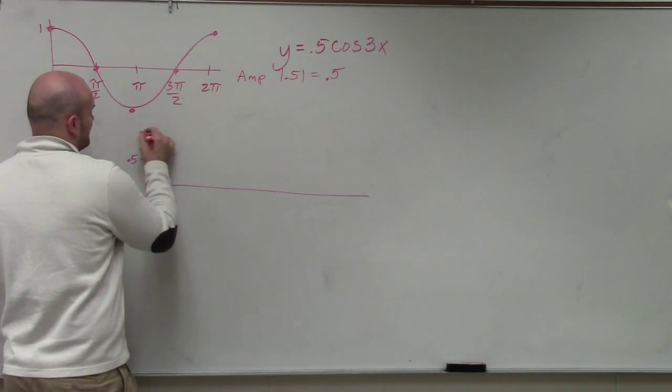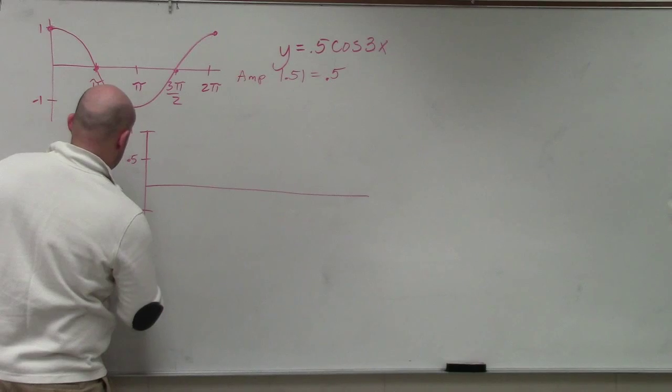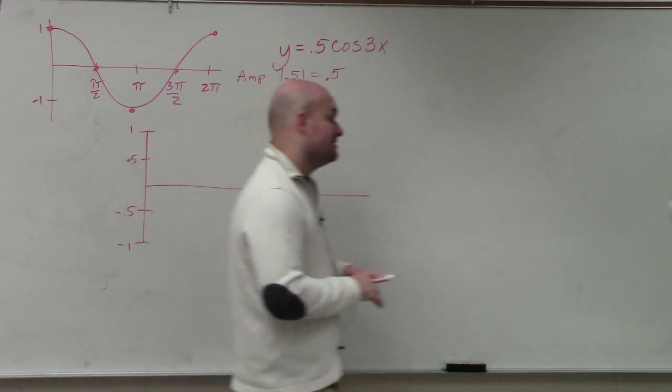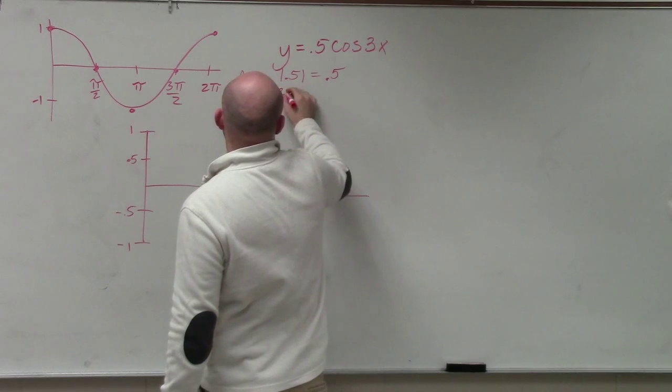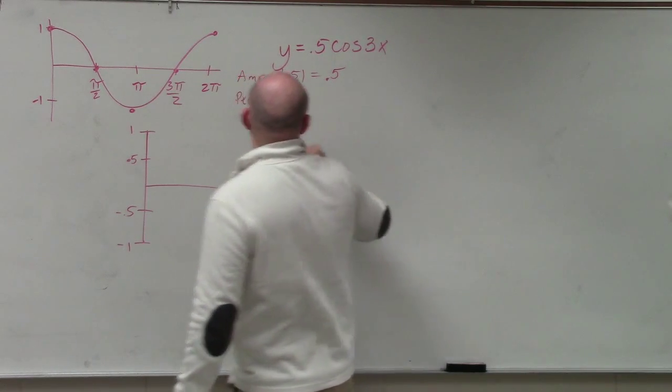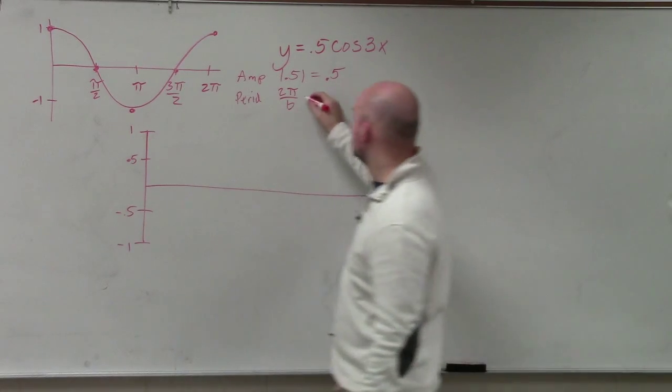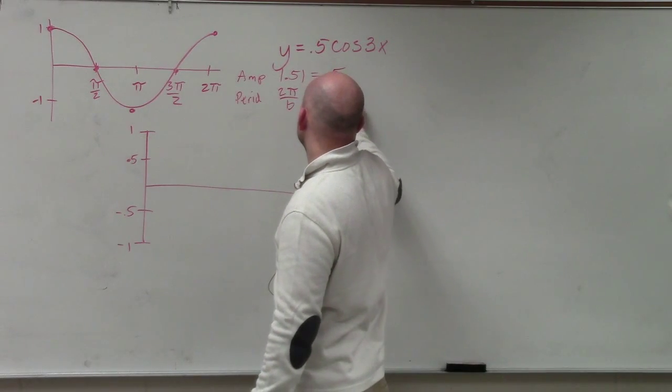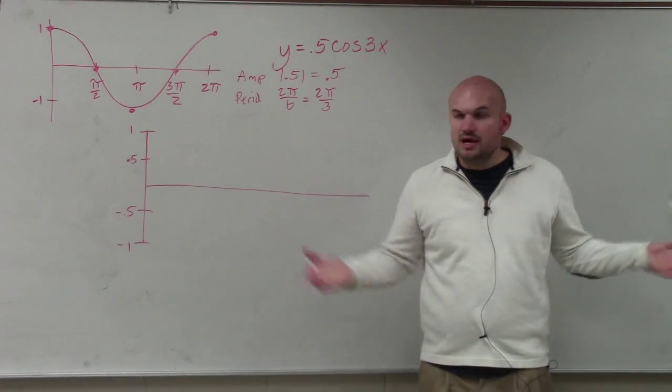I'll just do 0.5 because that's how it's used in the problem. Then the next thing is to figure out the period. We need to take 2π divided by b. What is my b in this case? 3. So 2π divided by 3. Can I simplify that any further? No, so that's it.